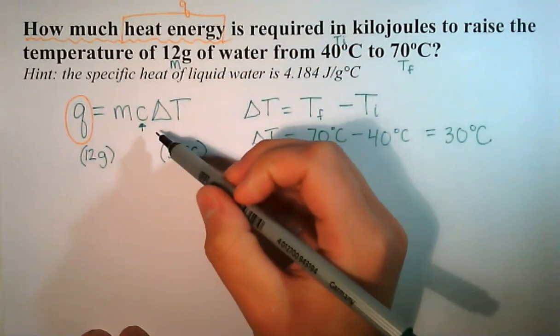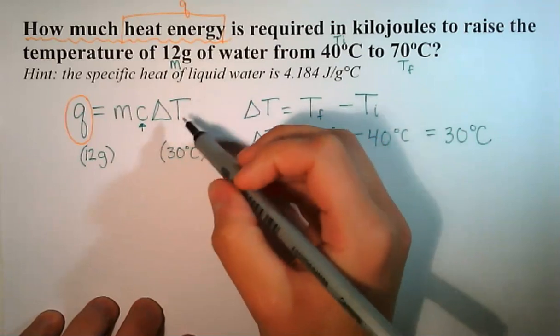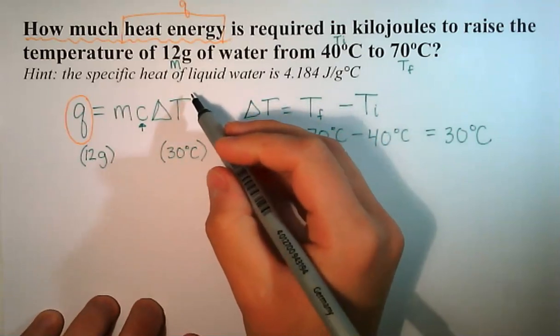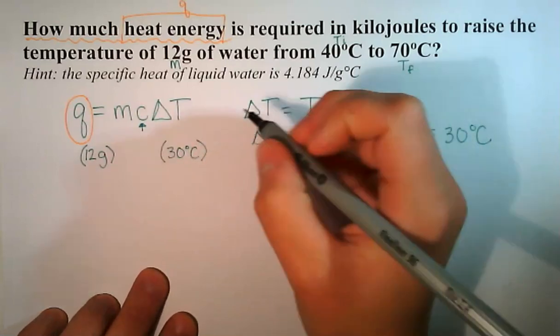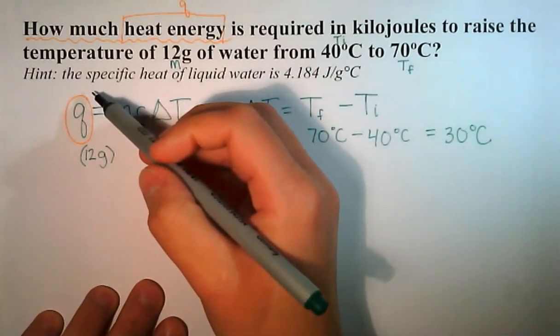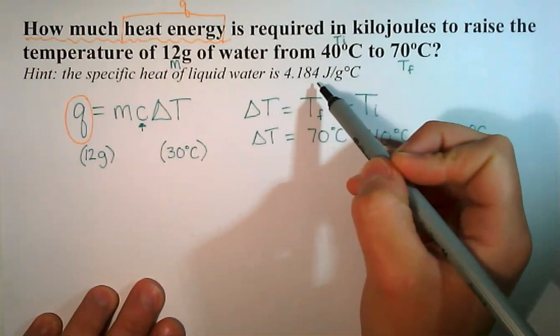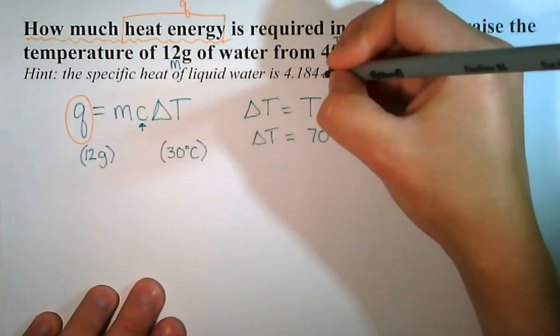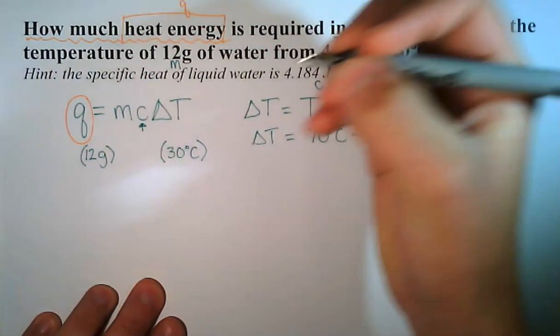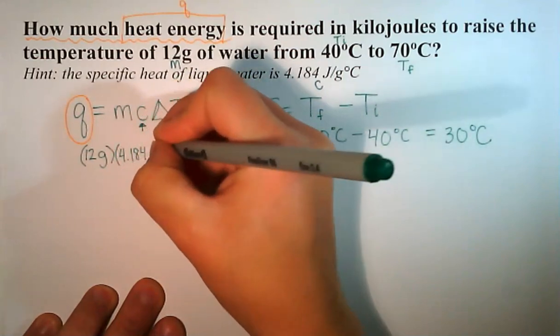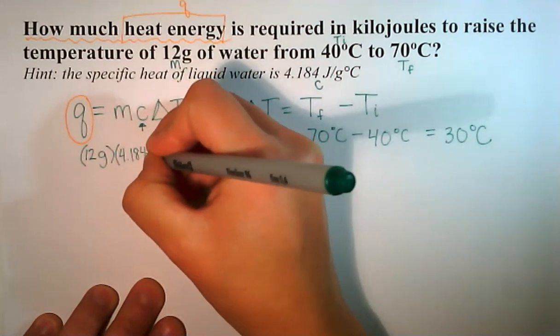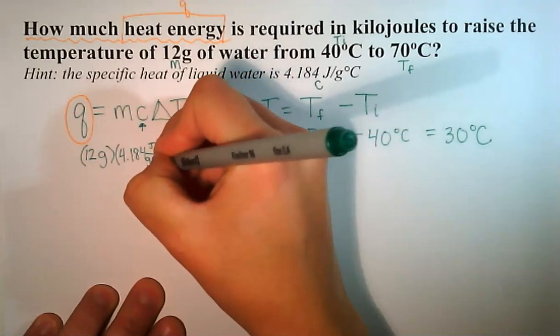The specific heat of liquid water is the specific heat that you are supposed to memorize, 4.184 joules per gram degree Celsius, but it is given in the hint of this problem. So that's our value for C, 4.184 joules per gram degree Celsius.